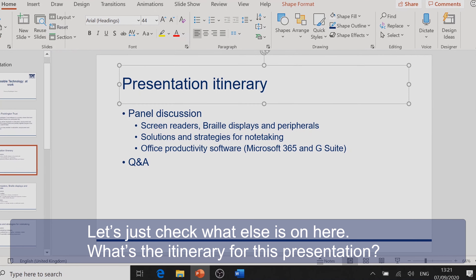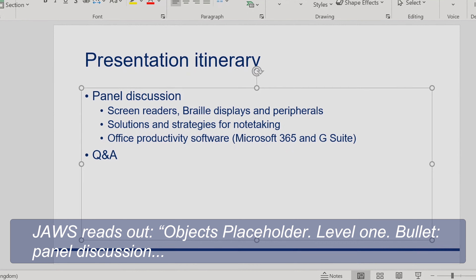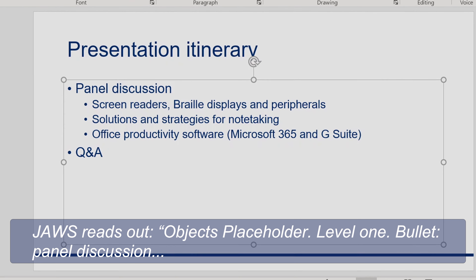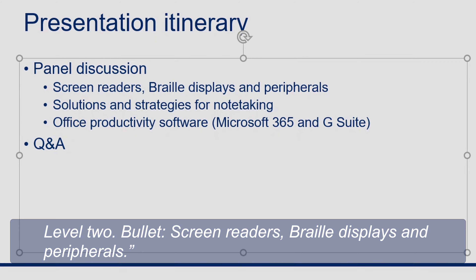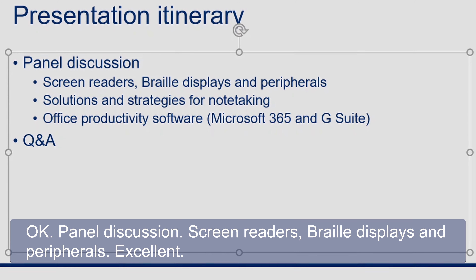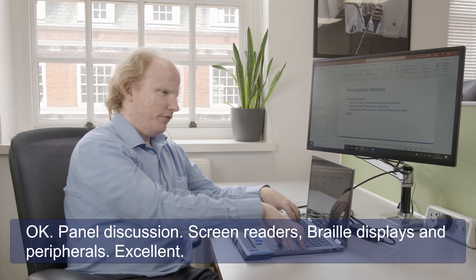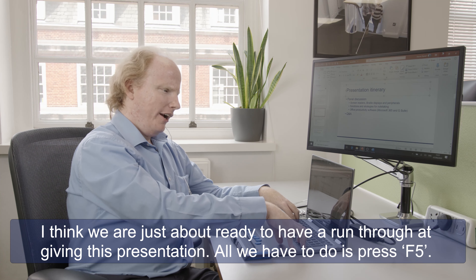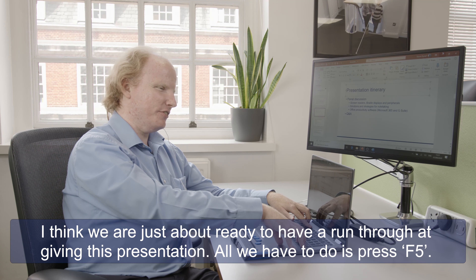Let's check what else is on this slide — what's the itinerary for this presentation? JAWS reads: 'Object placeholder, Level 1. Bullet: Panel discussion, Level 2. Bullet: Screen readers. Braille displays and peripherals.' So we have panel discussion, screen readers, and peripherals listed.